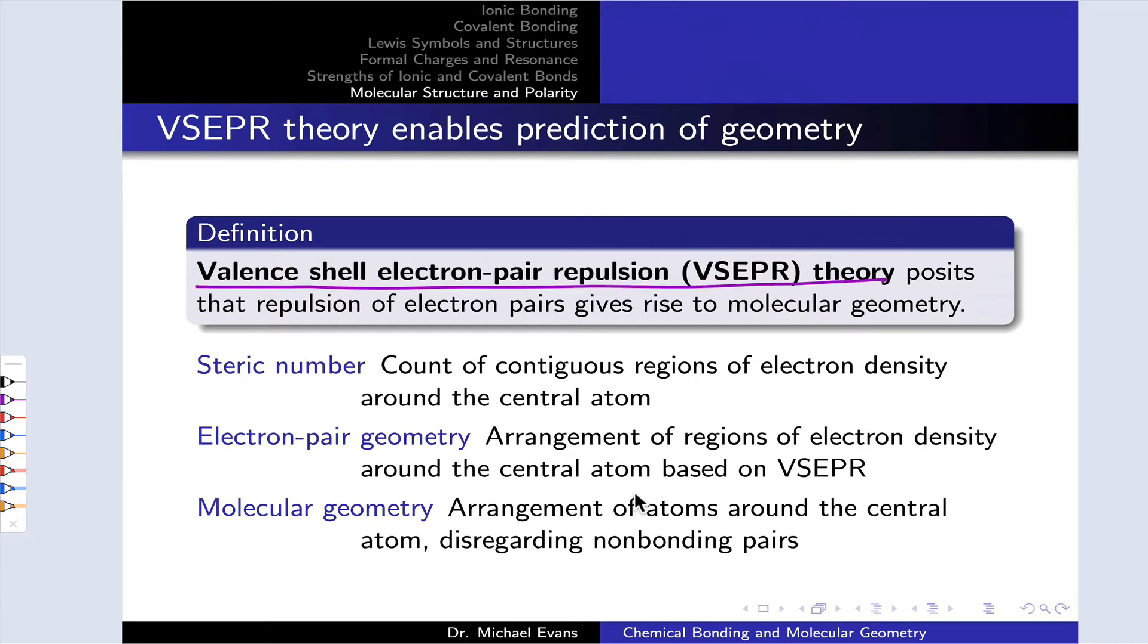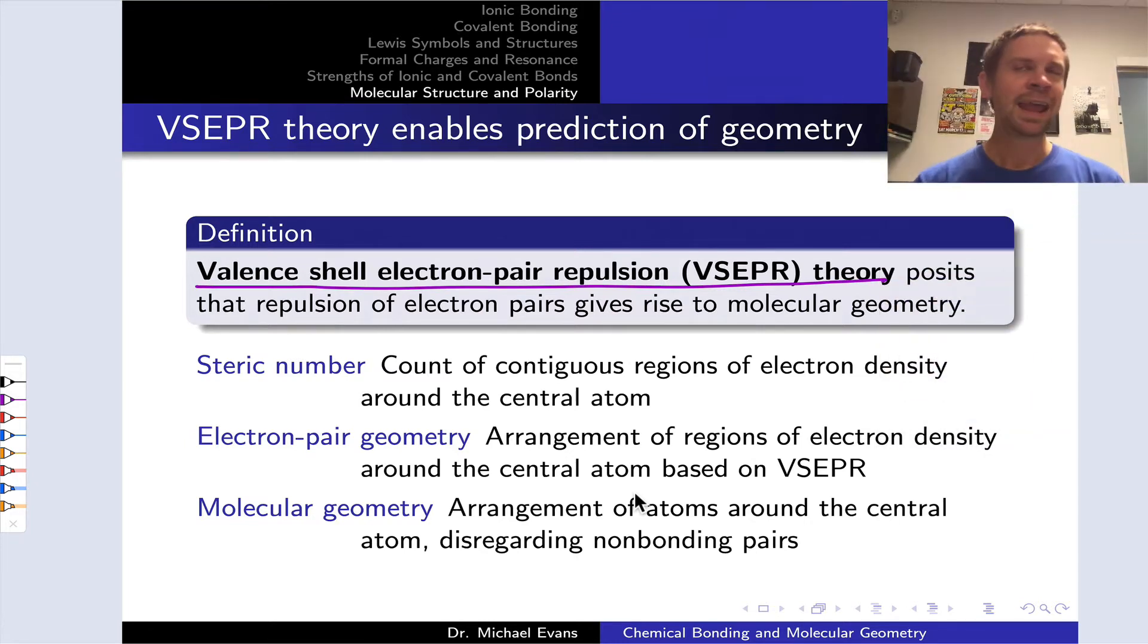That is a complicated set of words for a very simple idea. Electrons repel one another. The electron clouds associated with bonding regions and non-bonding or lone pairs of electrons repel one another and get as far apart from one another as they possibly can. In maximizing the distance between themselves, the electron clouds assume a set of standardized shapes. There aren't that many possibilities if we're talking about maximizing the distance between the electron clouds or minimizing the repulsion.